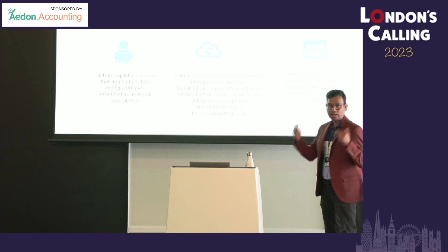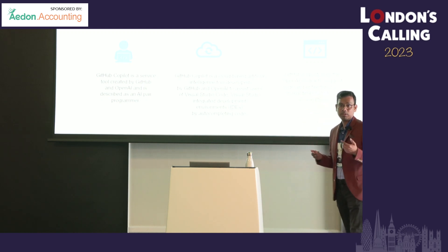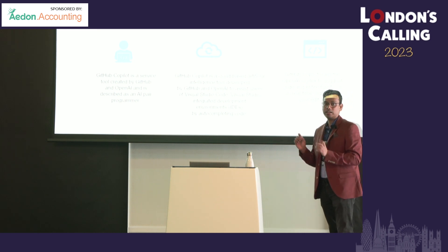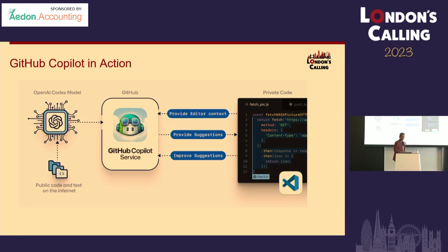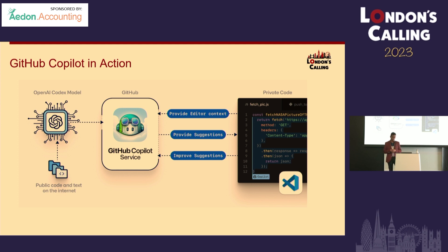GitHub Copilot is basically capable of reading your mind while you write code. You're typing something, providing a context, and it gives you a suggestion as you type. GitHub Copilot is trained on the OpenAI Codex model and trained on billions of lines of public code. When you provide any context — for example, if you are writing a class or fetching an image using JavaScript — you type something like a single English description.